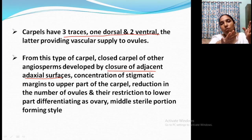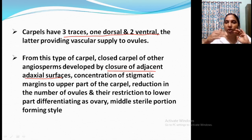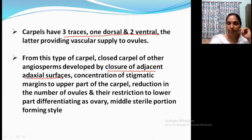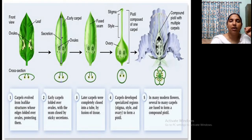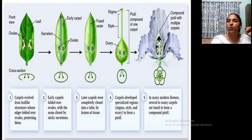You can see the picture here — carpel evolved from a leaf-like structure with edges folded over ovules, and some sticky secretions arise to close the foldings. Then carpels were completely closed into a tube at a later stage, then becoming stigma, style, and ovary. In the final cases in many modern flowers, several to many carpels are fused to form a compound pistil. Fusion of adjacent carpels results in syncarpous gynoecia.